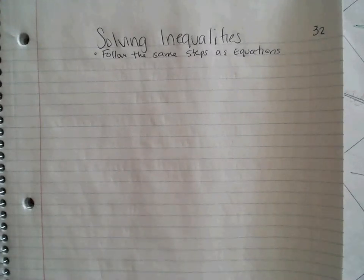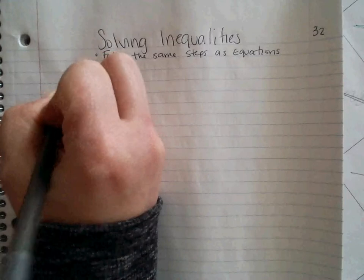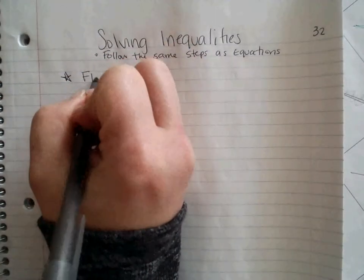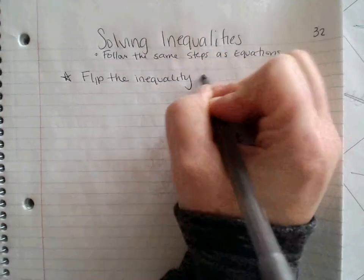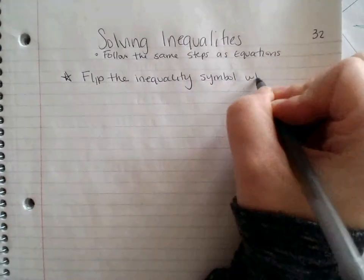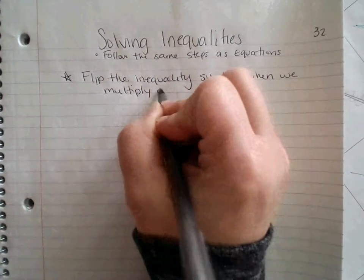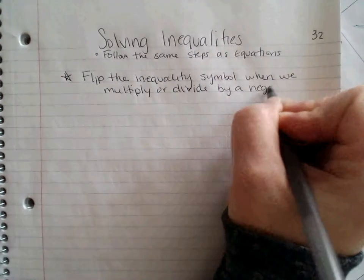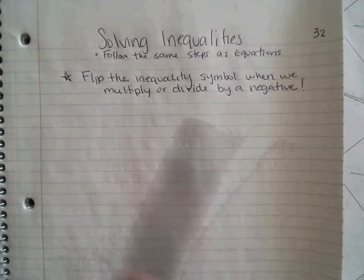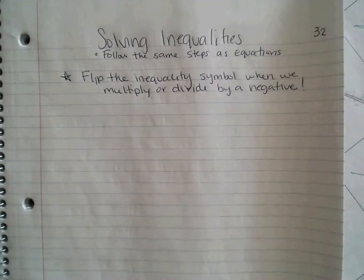There are going to be a couple things that we need to look for. So I am going to write the one rule that's different, and that is we flip the inequality symbol when we multiply or divide by a negative. And I will point out when we're using that rule as we move on. But that is the only difference because now we have a greater than and less than symbol, whereas before we just had an equal sign. We can't really flip an equal sign.